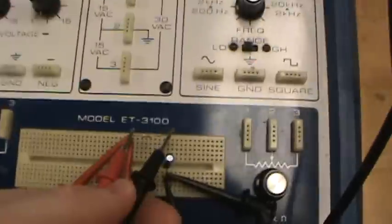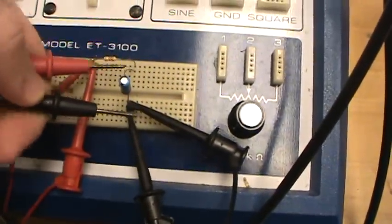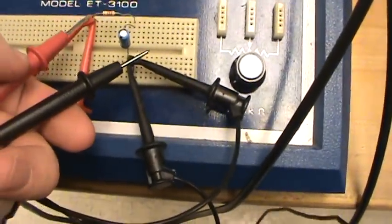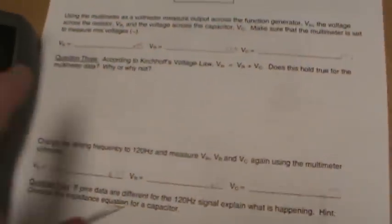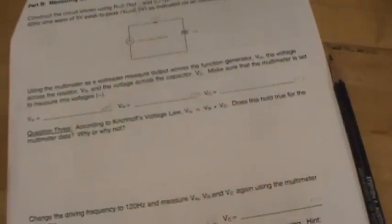So across the resistor like this, across the capacitor like that, and across the entire circuit like that to give the voltage in, the voltage drop across the resistor, and the voltage drop across the capacitor.